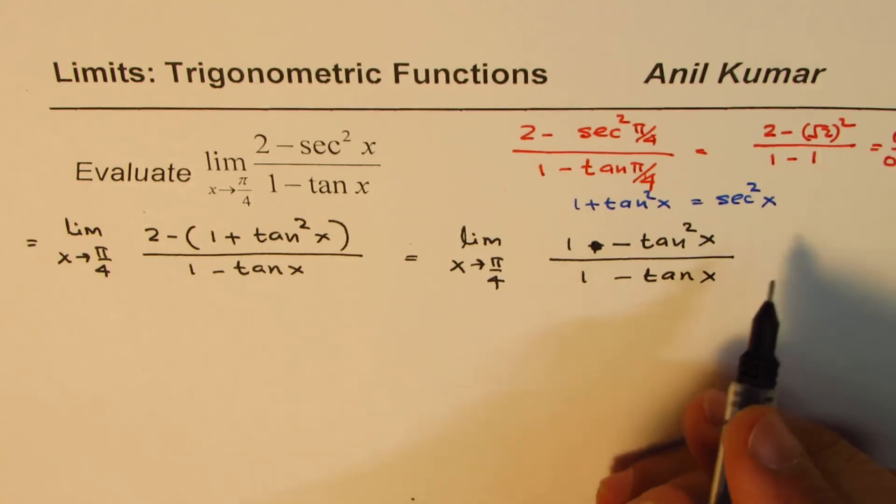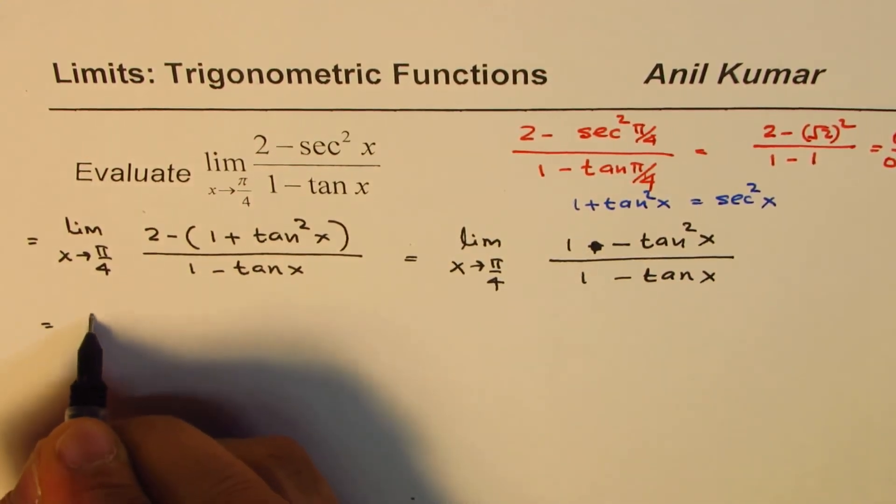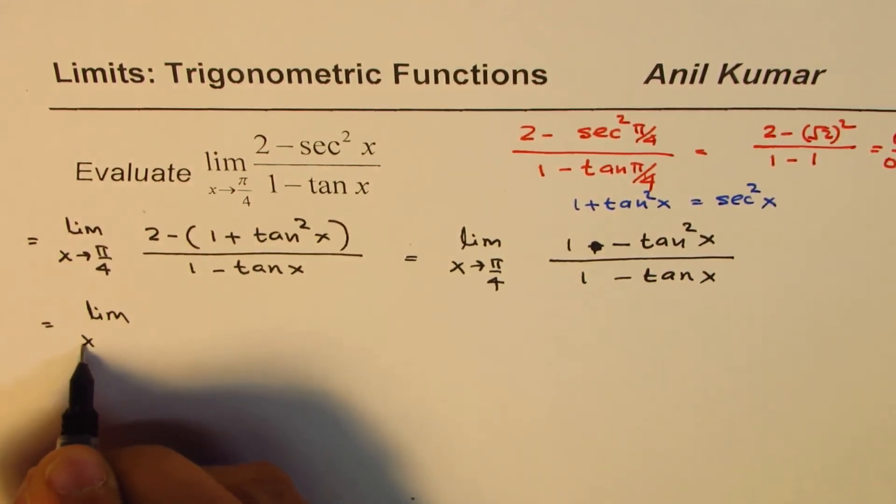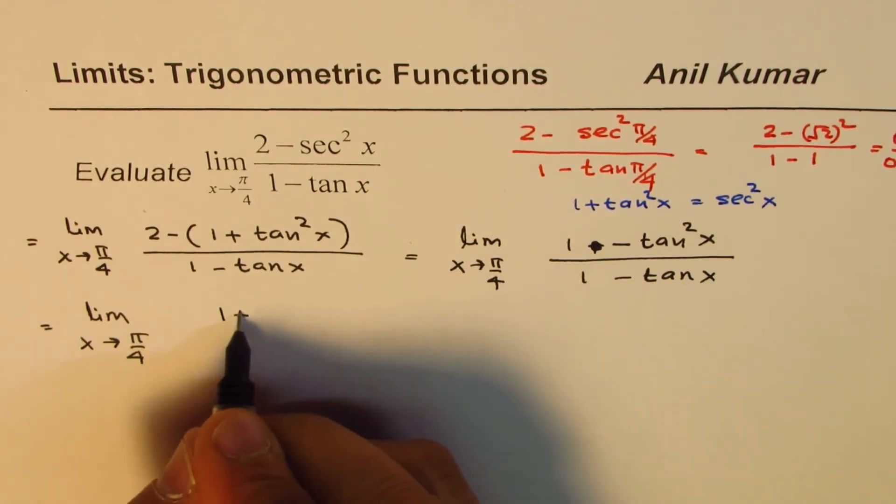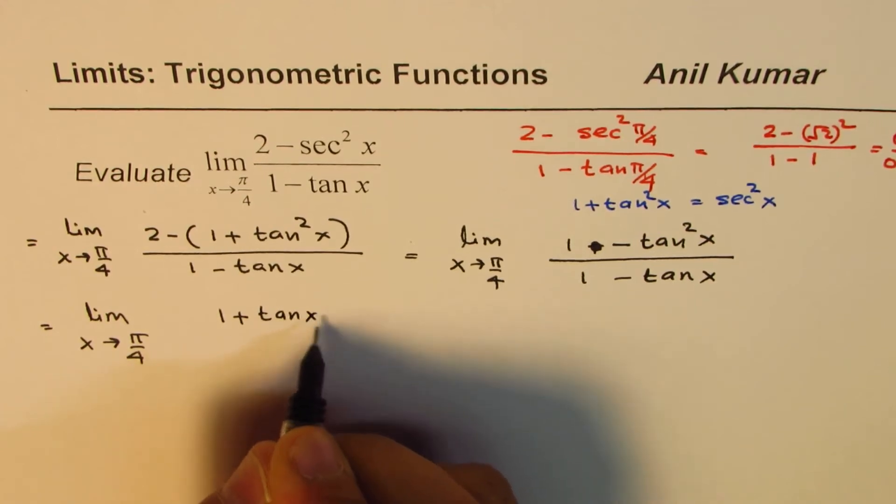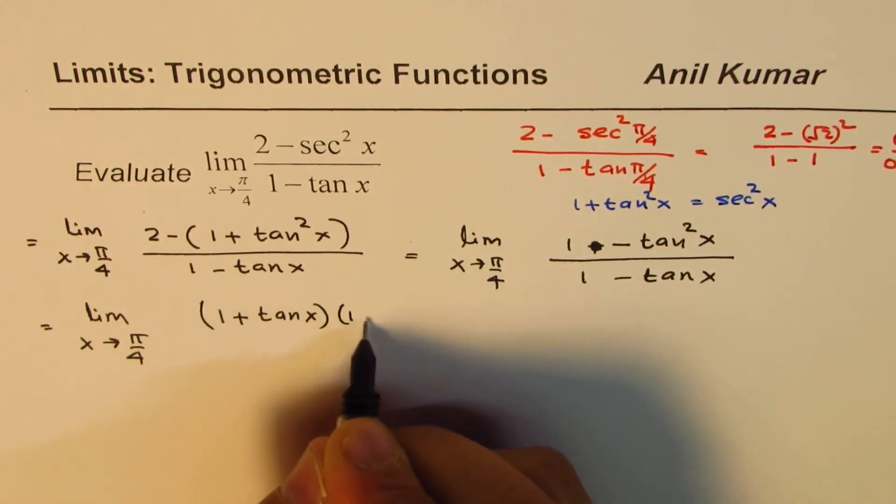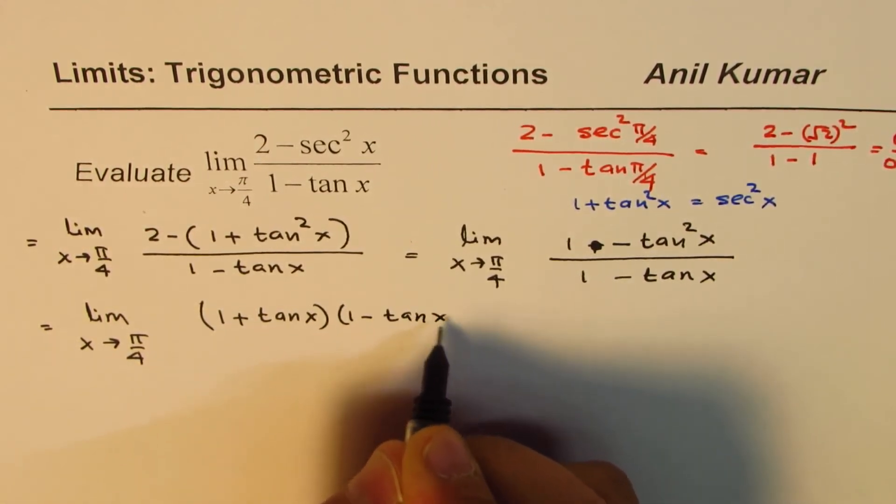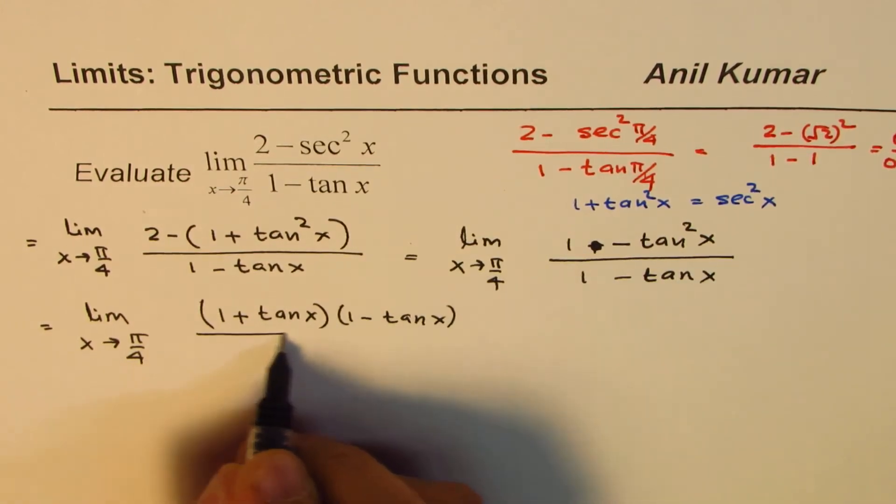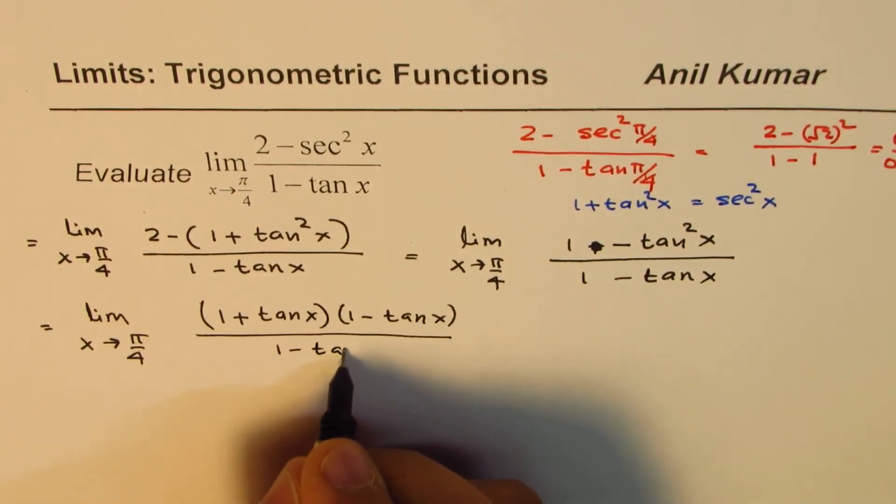This is the difference of squares, so we can write this as: limit as x approaches π/4 of (1 + tan x)(1 - tan x) / (1 - tan x).